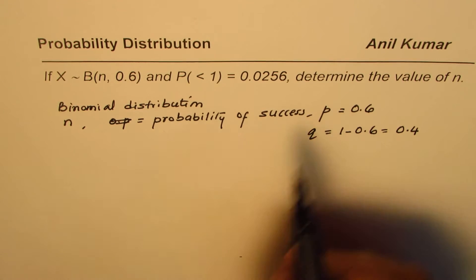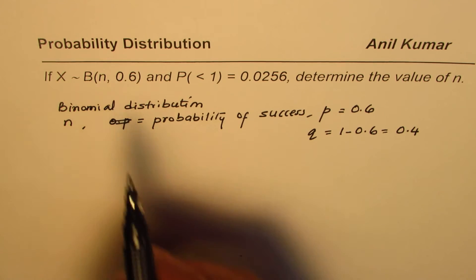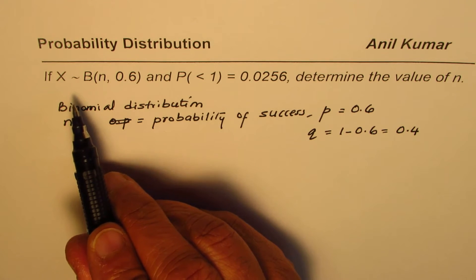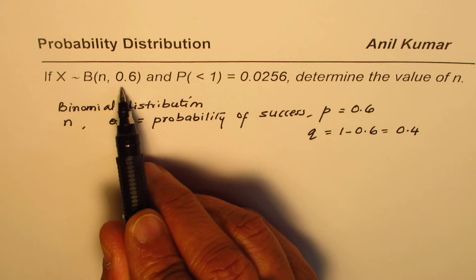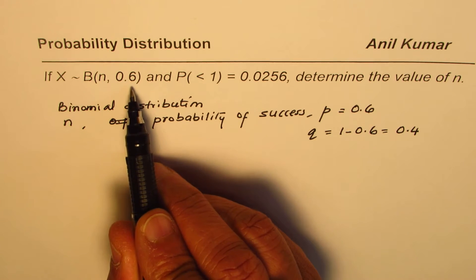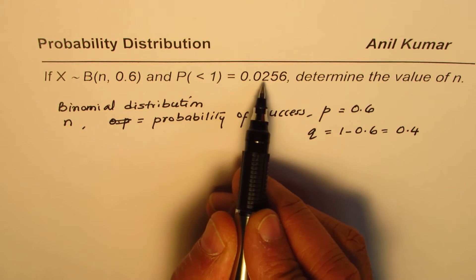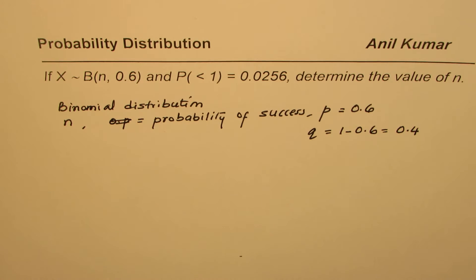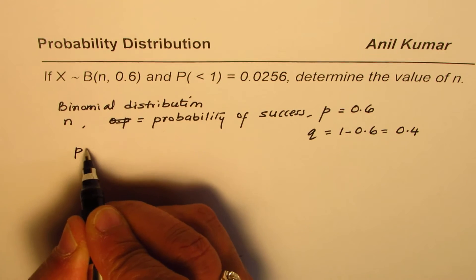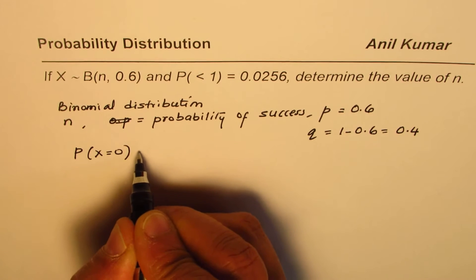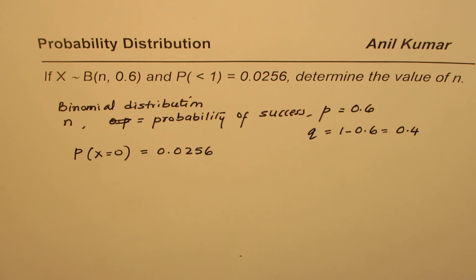The question is, we are given that for the random variable X where the binomial distribution is given to us with probability of success 0.6, and the probability for less than 1 is 0.0256. It means what? Less than 1 means that X can have value of 0. So that is to say, the probability for X equals 0 is actually equals to 0.0256.